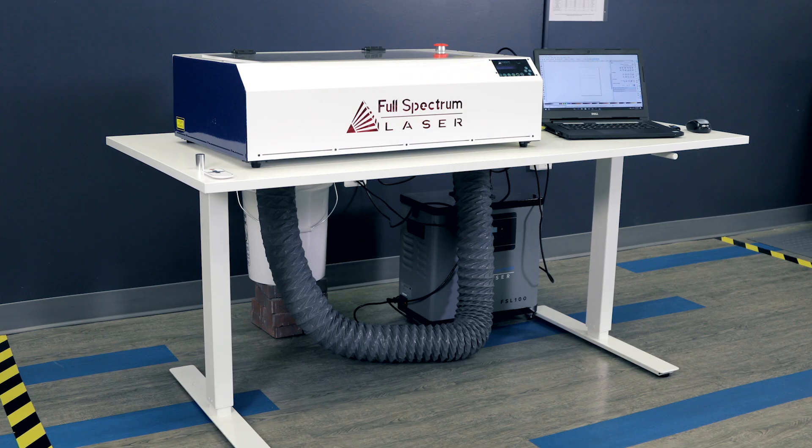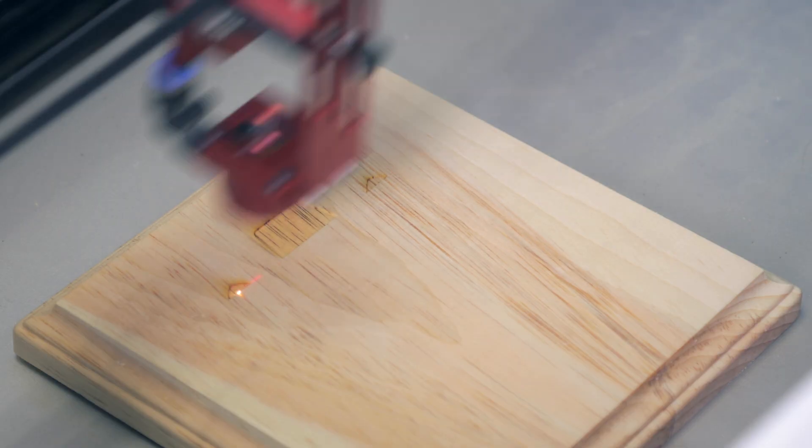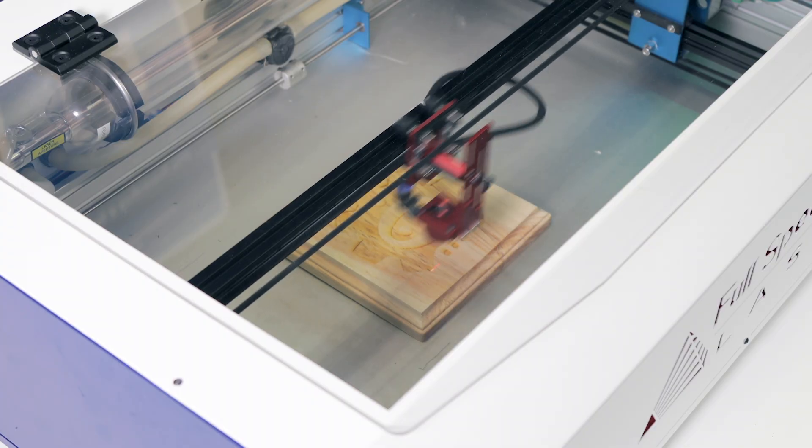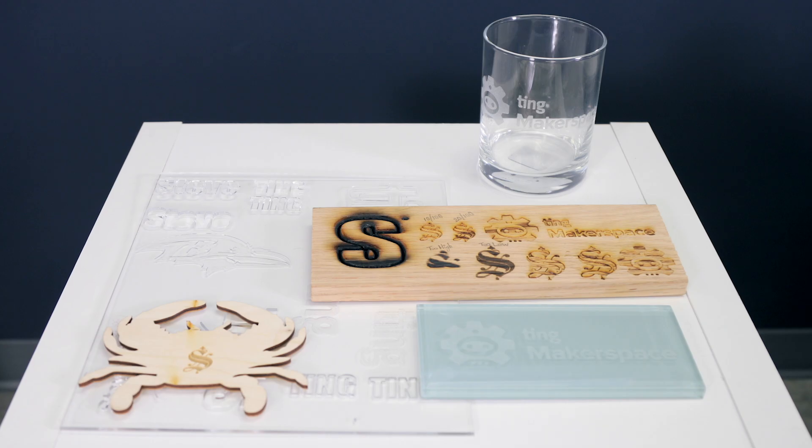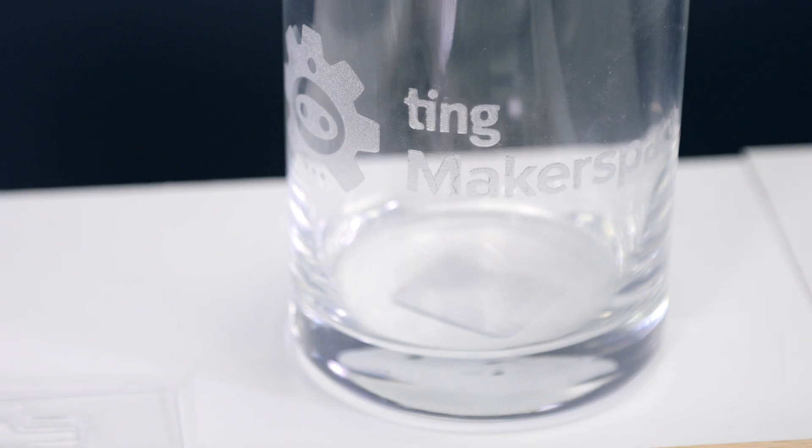The Full Spectrum Hobby Laser is a great machine for etching and cutting out designs. This 40-watt laser can cut materials like wood, acrylic, leather, and fabric up to a quarter of an inch thick. It can also etch and engrave materials like stone, tile, glass, and more.